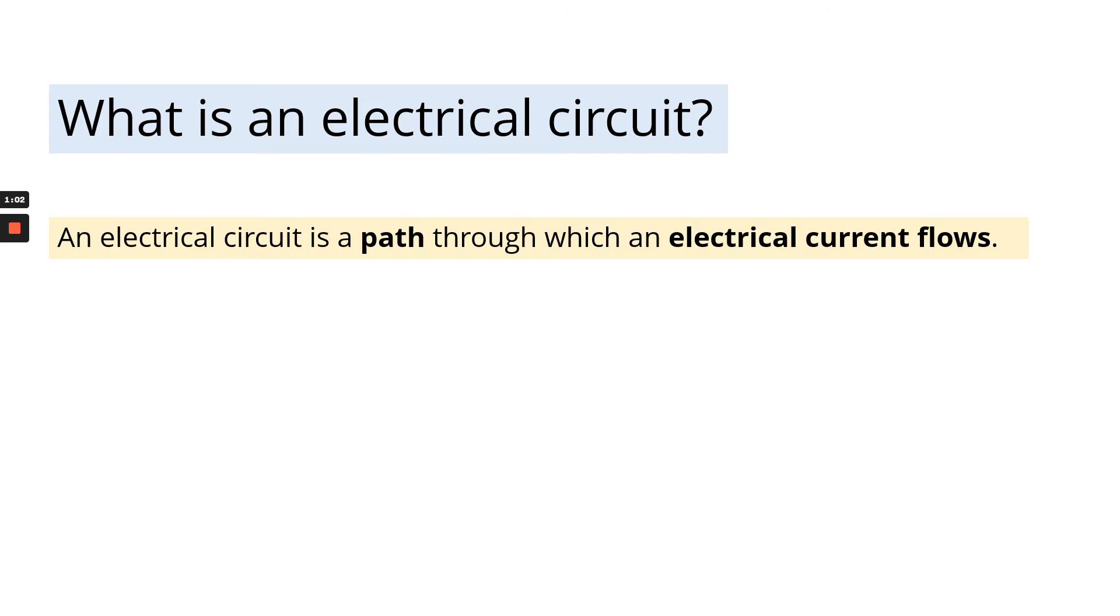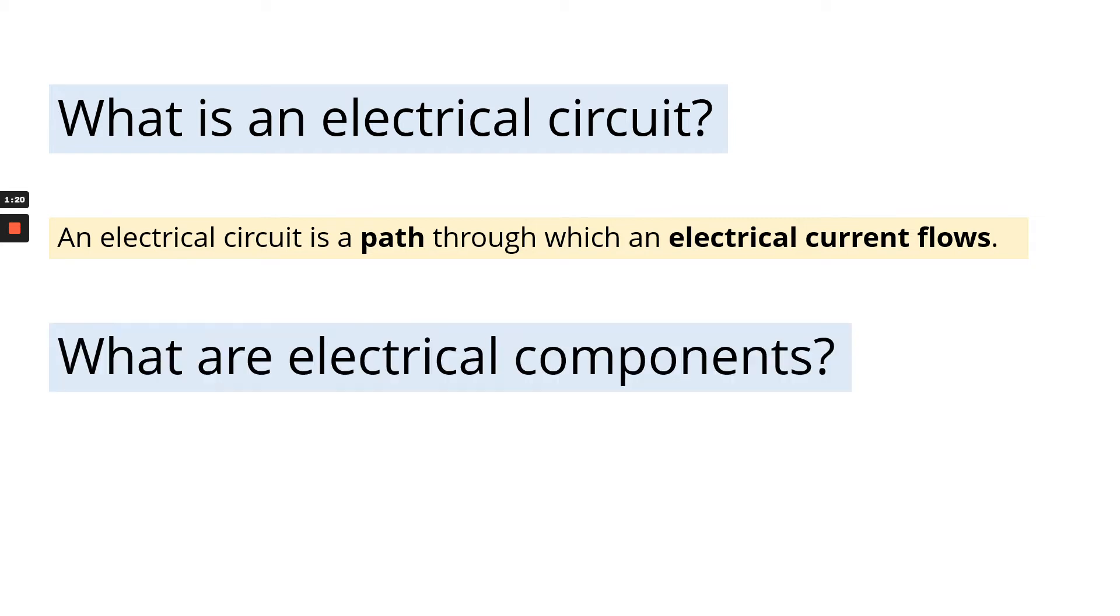So what is an electrical circuit? An electrical circuit is a path through which an electrical current flows. So it needs to be a closed loop, a path where electrical current flows. Within that electrical current, the path, we've got different electrical components that can be placed around the circuit in different positions in different ways in order to produce a specific outcome. But what is an electrical component?